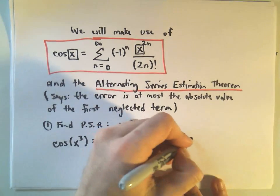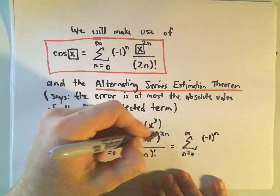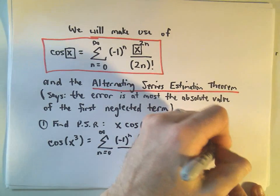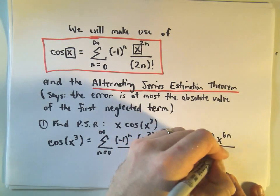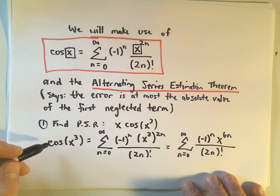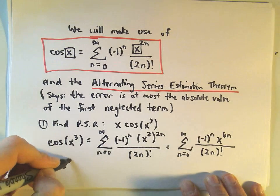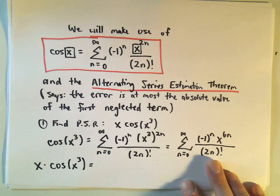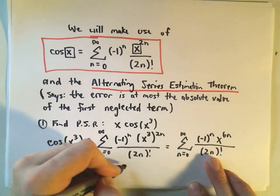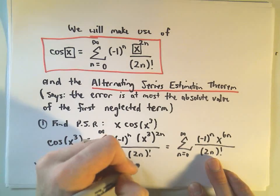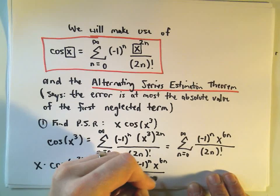We can simplify this a little bit. So this is the summation from n equals 0 to infinity of negative 1 to the n, times x to the 6n, all divided by 2n factorial. That's a starting point, but we want the function x times cosine of x cubed. We know the power series representation for cosine of x cubed — we just produced it — so now we just take x and multiply it by that series representation: negative 1 to the n, times x to the 6n, over 2n factorial.